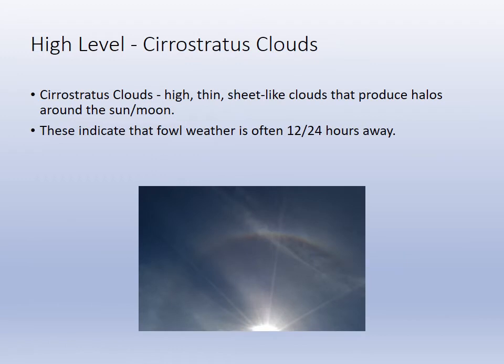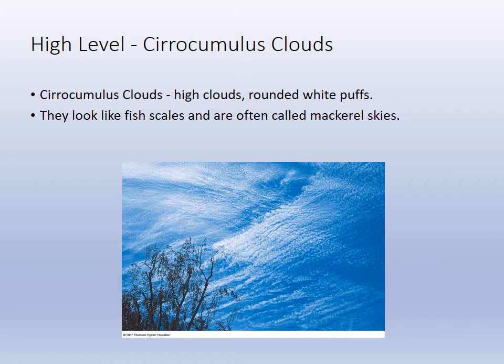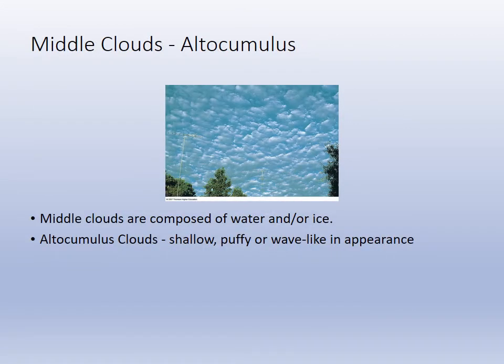Cirrostratus clouds form a thin layer high in the atmosphere. They tend not to be easily seen, but the sky is not brilliant blue and you can often see a ring around the sun. They are also indicators of an approaching low pressure system. The high-level fluffy white clouds are called cirrocumulus — high-level cirrus clouds. Mid-level cumulus clouds, or altocumulus, have a marshmallow puffy wave-like appearance covering the sky.